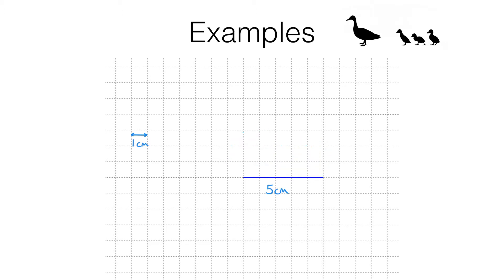Now I can extend the line segment in a second direction like this. Now I've got a rectangle. This is a two-dimensional object.